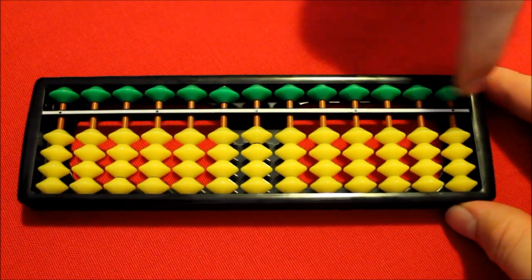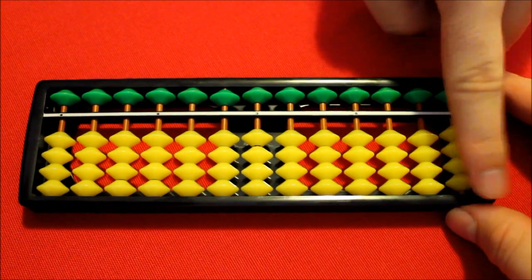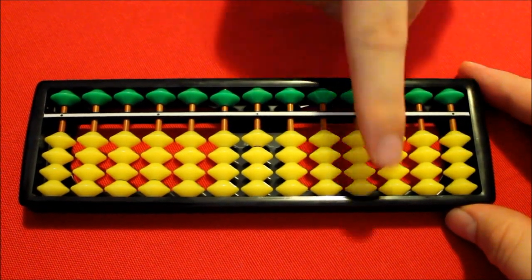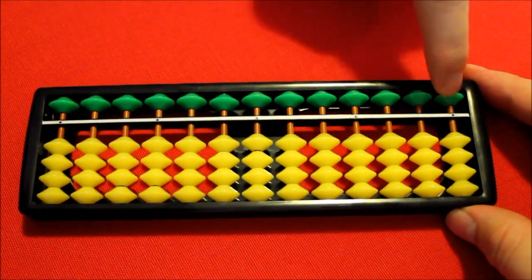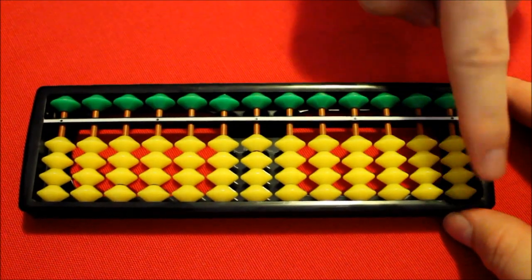Okay, now I'm going to do some counting. I'm going to start using this column here. Normally, this is the first column you'd use in a soroban, but to make it easier to see, we'll start with this one.